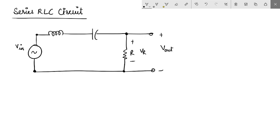Now the impedance of the resistor is R. The impedance of this capacitor is 1 upon jωC and the impedance, or rather the reactance, of this inductor is jωL. We can easily write V_out is V_in times R upon R plus 1 upon jωC plus jωL.